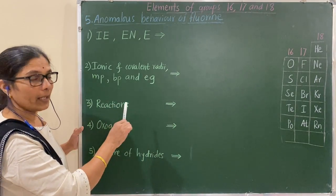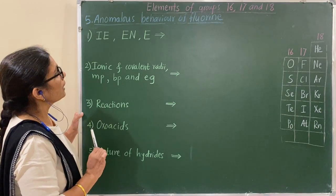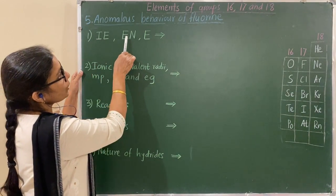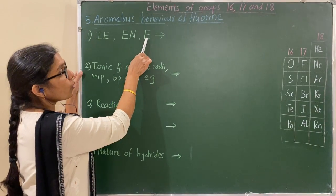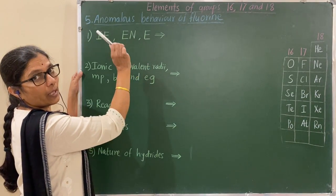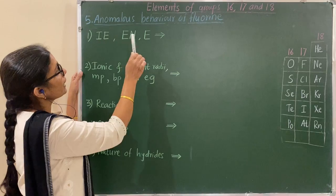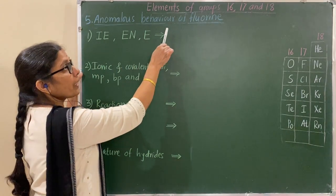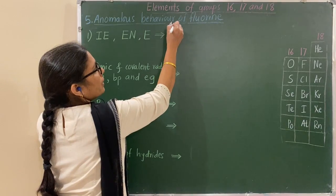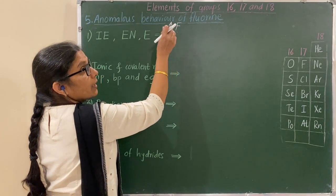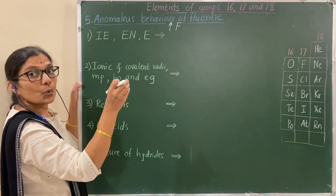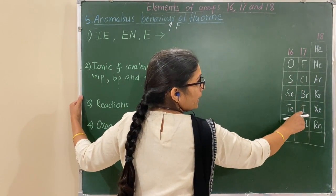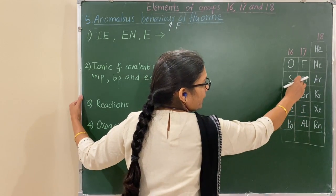Now let us see the anomalous properties of fluorine one by one. Ionization enthalpy, electronegativity, and electrode potential — values for fluorine are higher than the expected trends shown by other halogens.